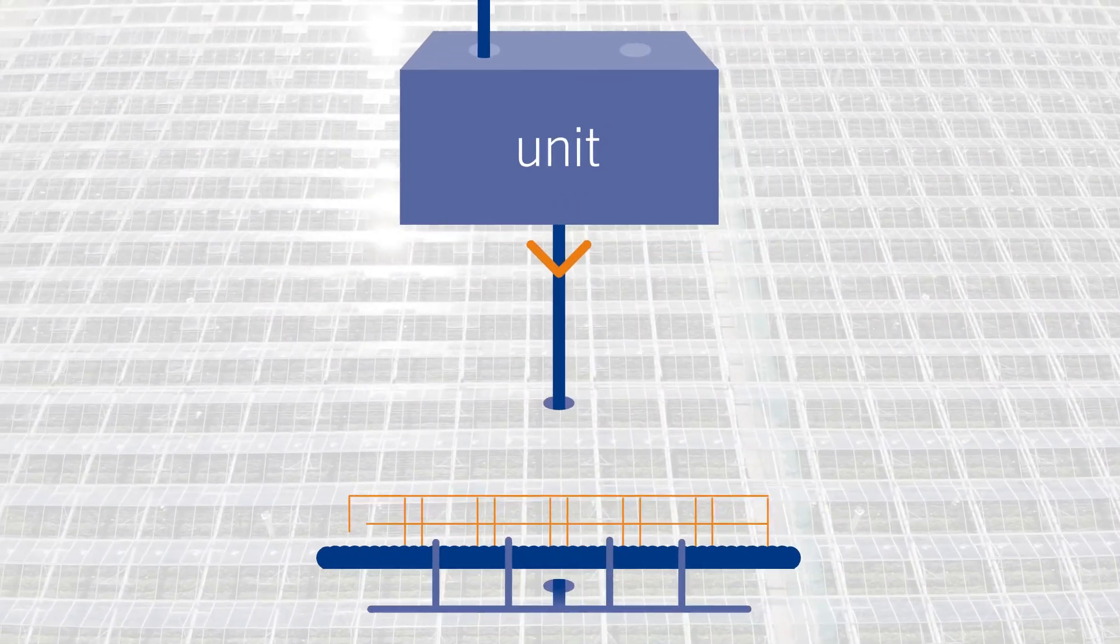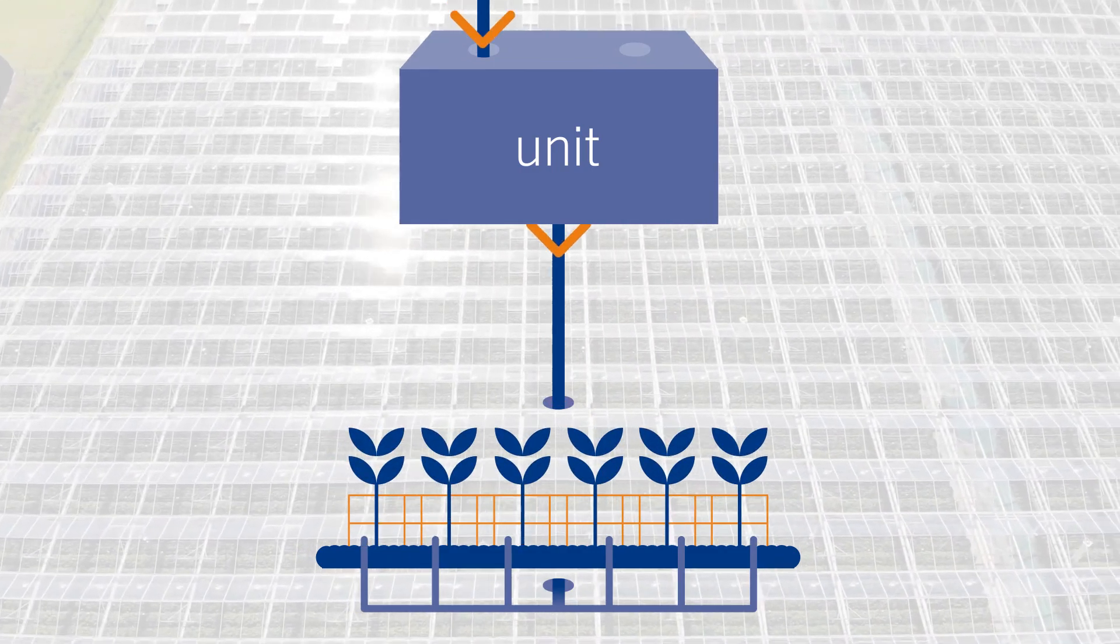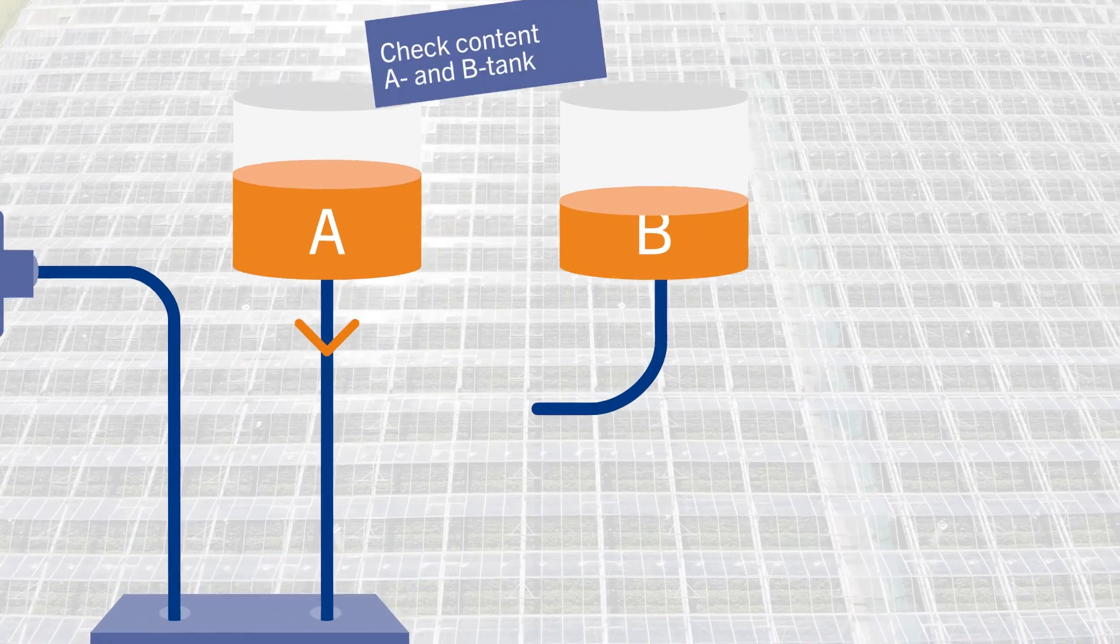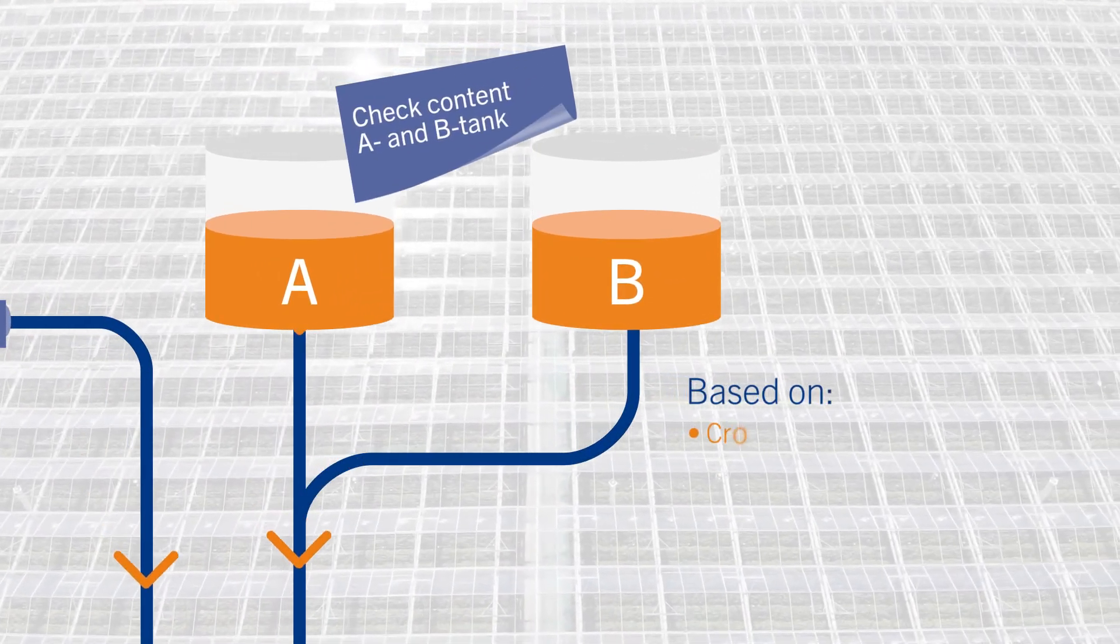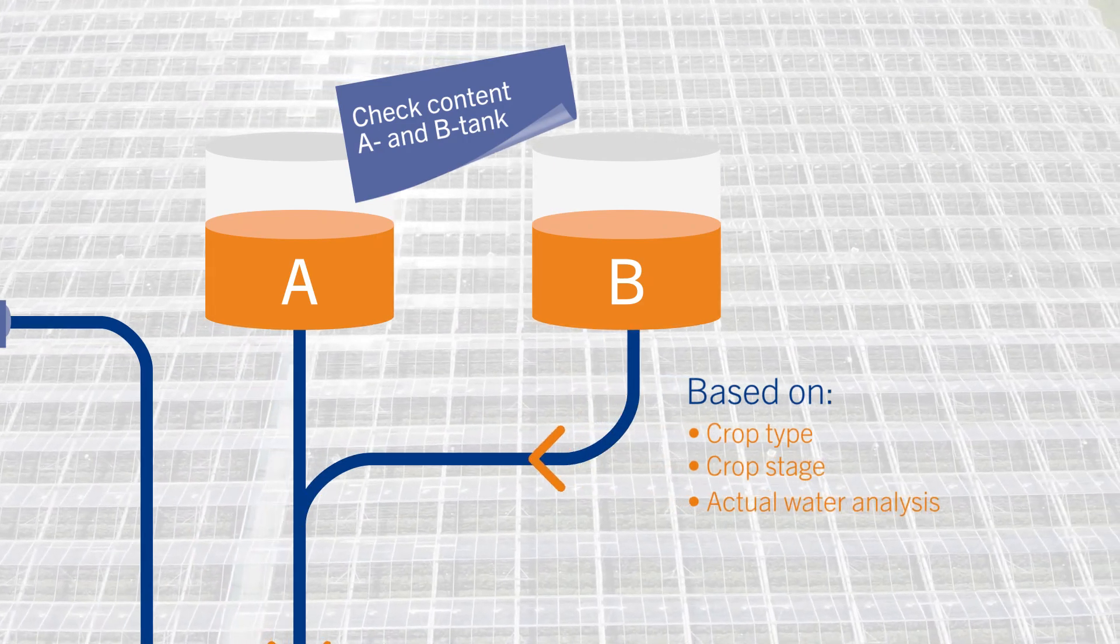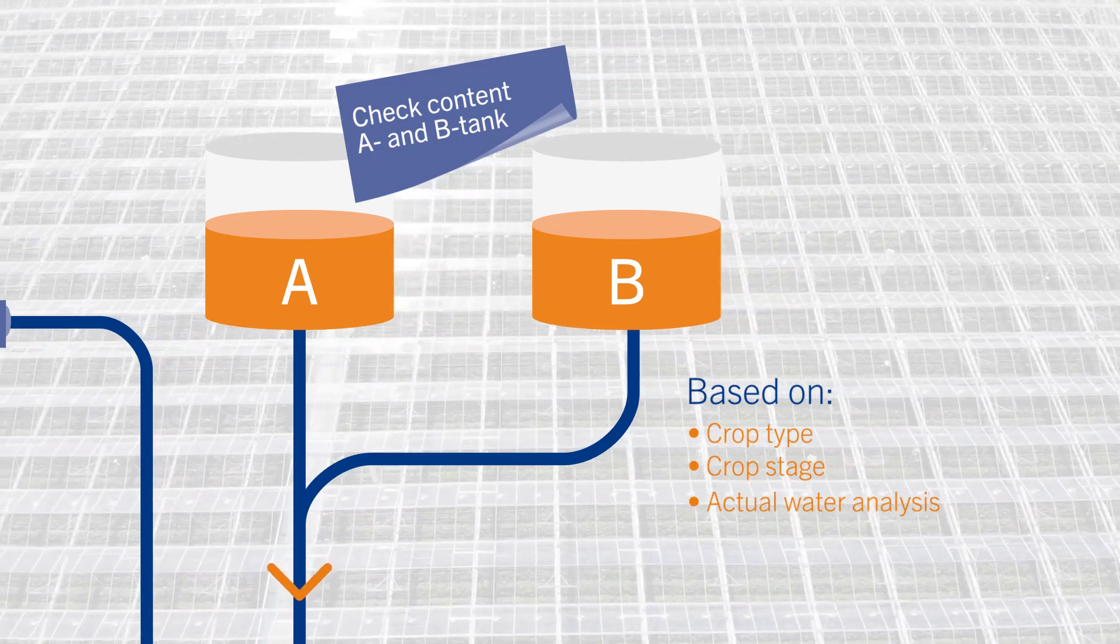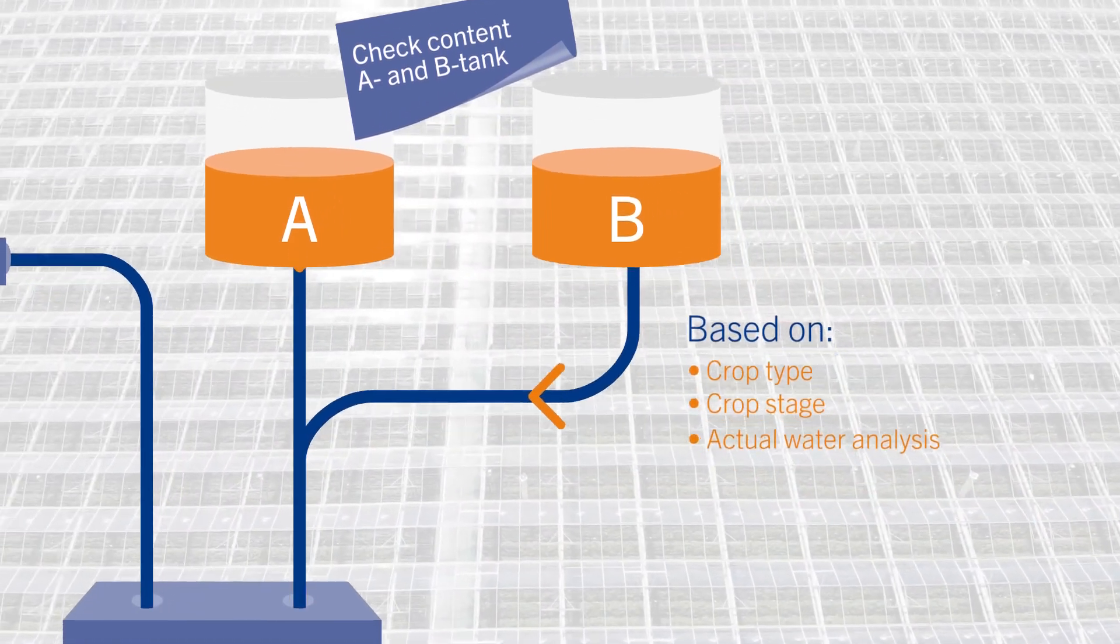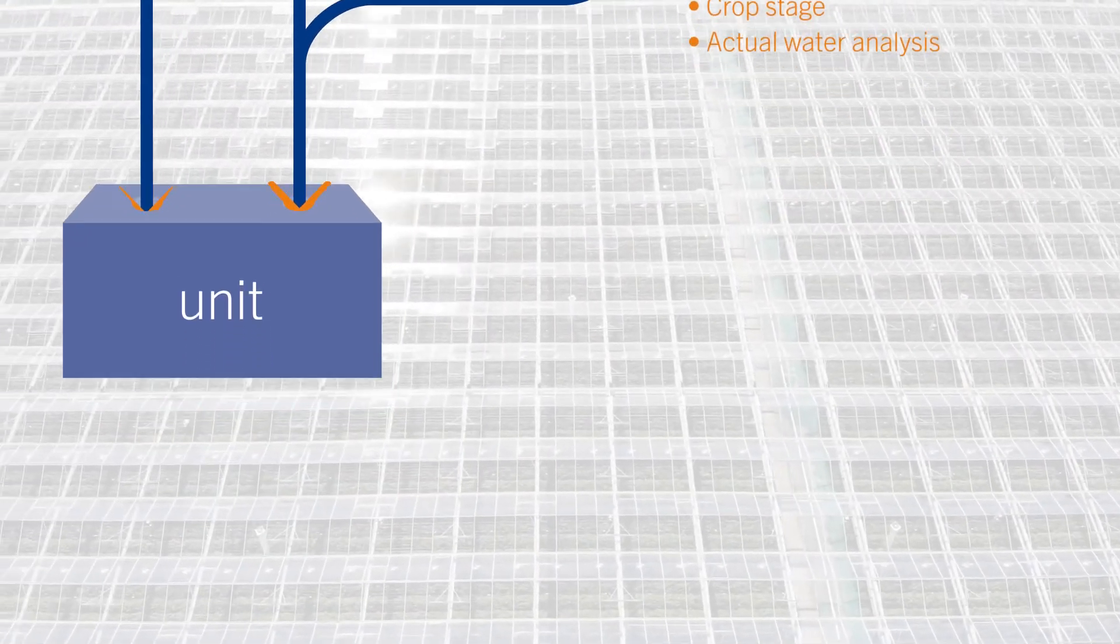Water and nutrient supply must be adjusted to the crop and the growing medium. We can calculate a specific recommendation for the A and B tank based on crop type, crop stage and the actual water analysis. This enables you to provide the crop just enough nutrients for optimal production and quality without wasting fertilizers.